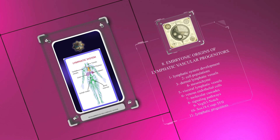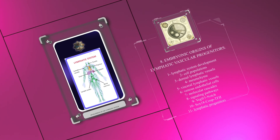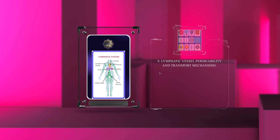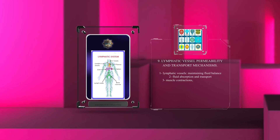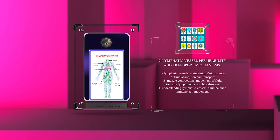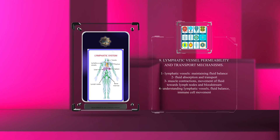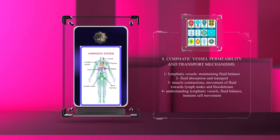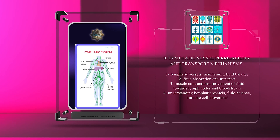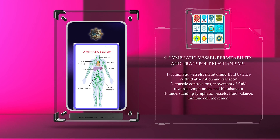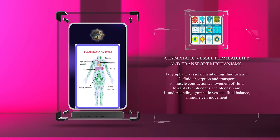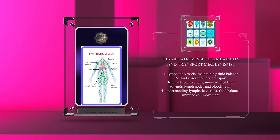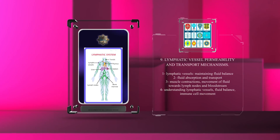Lymphatic vessels are important for maintaining fluid balance. They absorb fluid and transport it back to the circulation. They have unique structures that allow for fluid uptake and also use muscle contractions to move fluid towards lymph nodes and the bloodstream. Understanding how lymphatic vessels work is important for understanding fluid balance and immune cell movement.